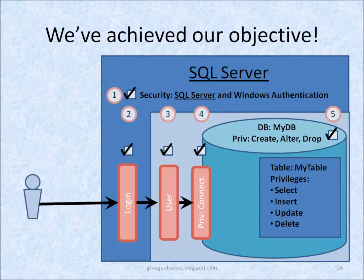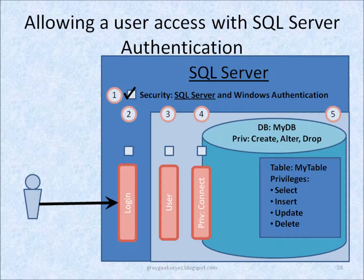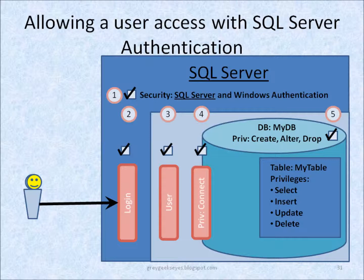To recap: to allow a user to access SQL Server using SQL Server authentication, first we have to set up SQL Server appropriately. Then we have to define the login. Then define a user in the database that corresponds to the login — and that action also gives the user the Connect Privilege. Finally, we grant the user the privileges that they need against the tables in the database itself.